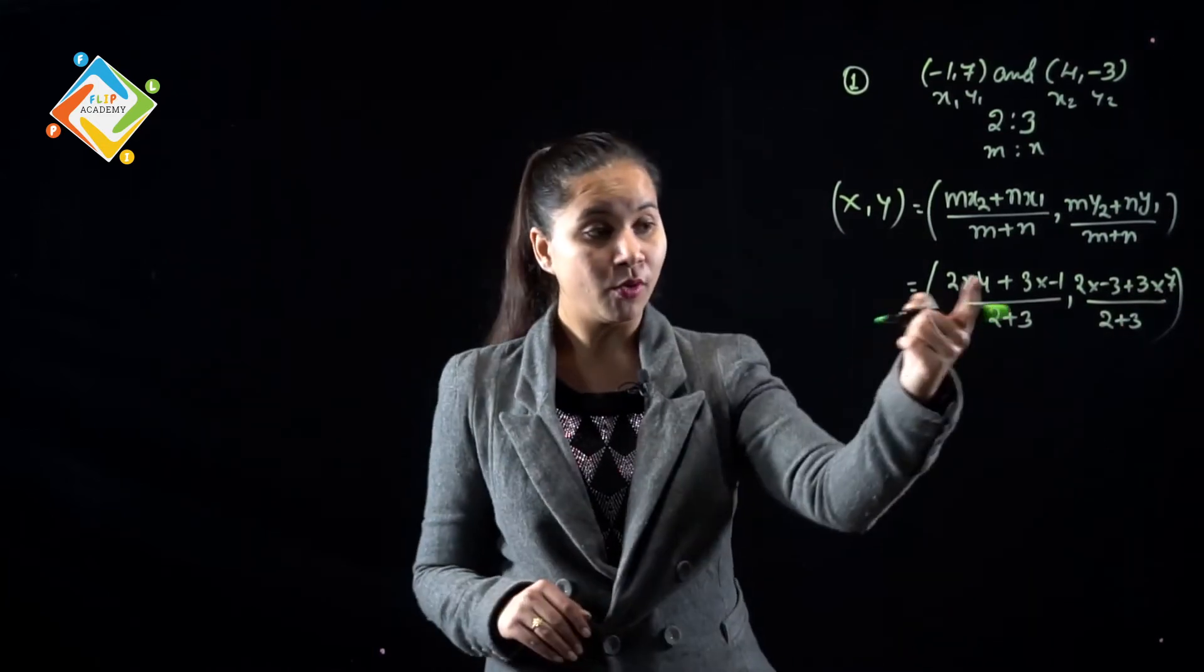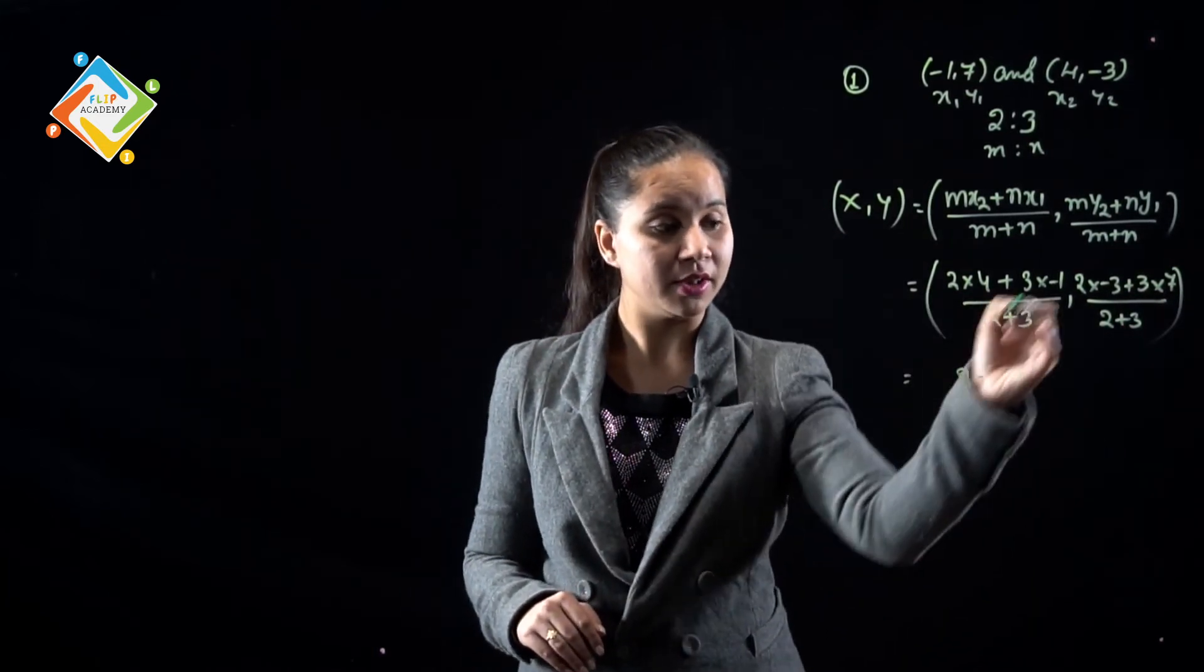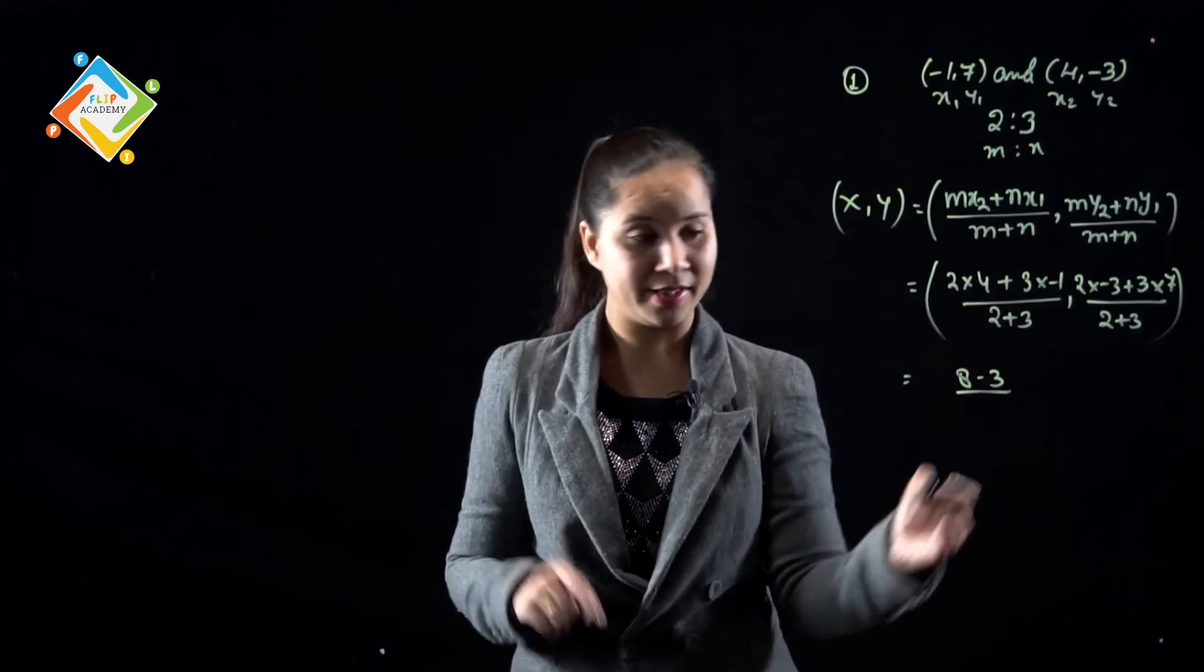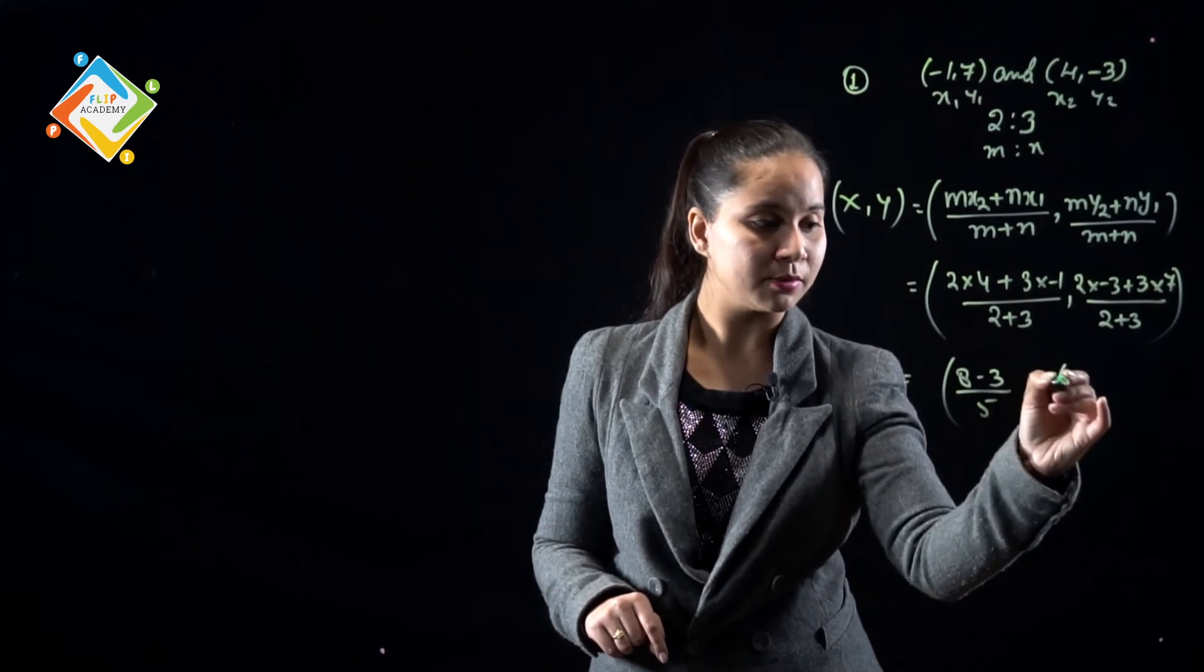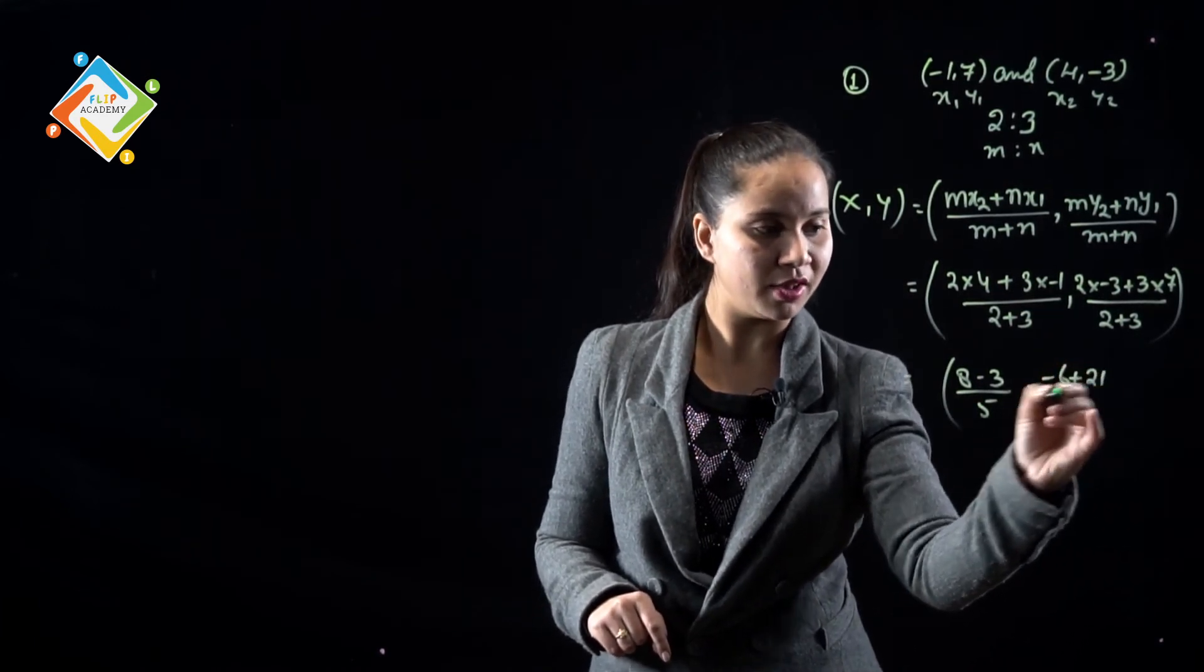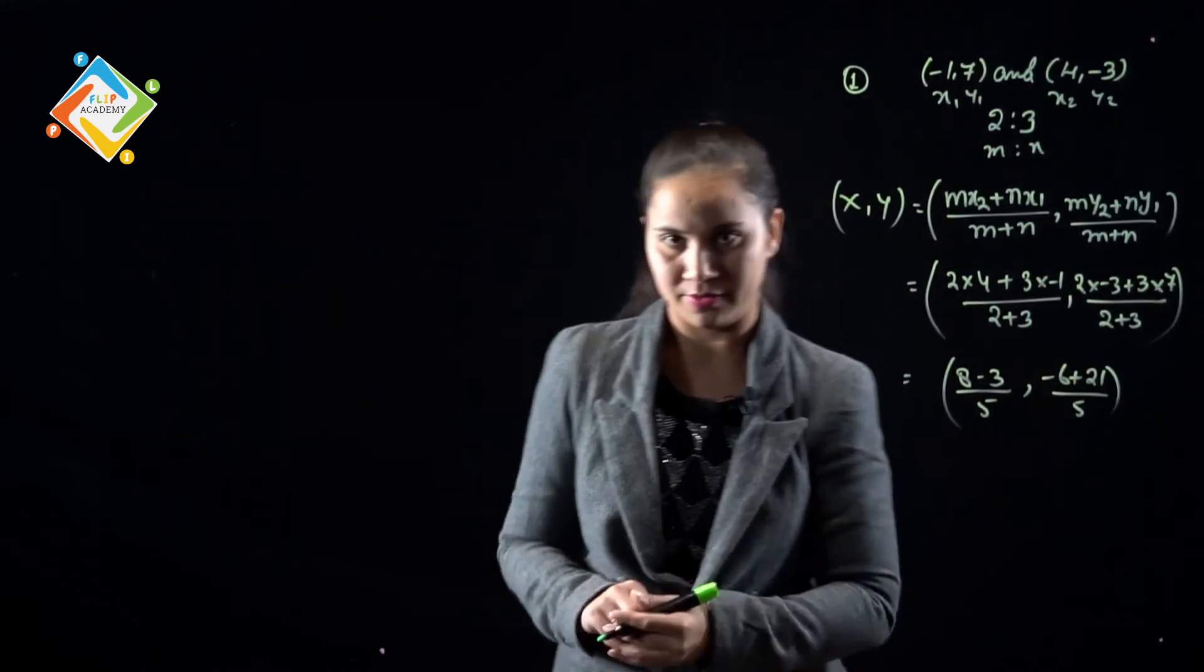So, 2 times 4 is 8, 3 times 1 is 3, but plus minus is minus, so 8 minus 3 is 5. Comma, 2 times -3 is -6, 3 times 7 is 21, upon 2 plus 3, which equals 5.